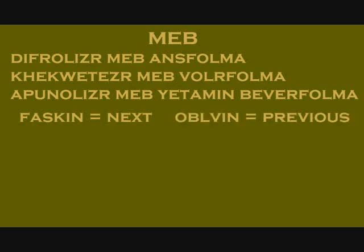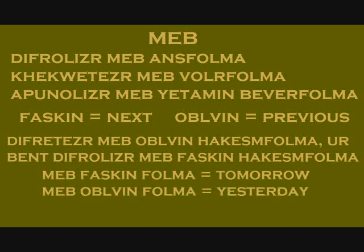The word for month is ansclara. To say that something happened or will happen on a certain day, you use 'meb.' For example, 'difroliser meb ansvolma' means it will snow on Monday, or 'kekwe teser meb voler folma' means it hailed on Friday. If you want to specify that the day is this week, you'd use 'yetamin' meaning this. For example, 'apunolizer meb yetamin beder folma' means it will rain this Thursday. The adjective faskin means next and obelvin means previous.